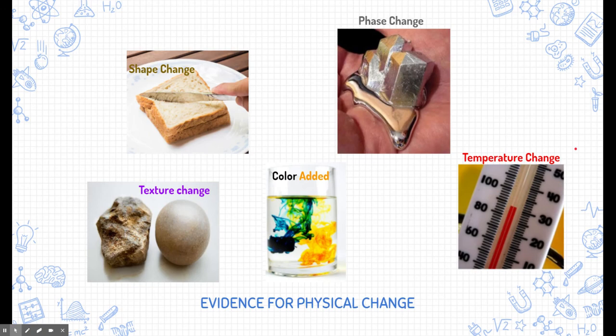How about for physical changes? Well, here's some examples of evidences for physical change. A shape change. If the substance goes through shape change, it's not changing its chemical formula. It may be cut in half or broken or shattered or put together. We're not changing the substance. We're just changing its shape.